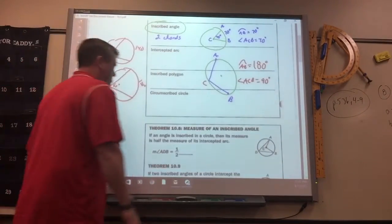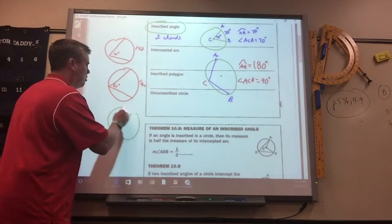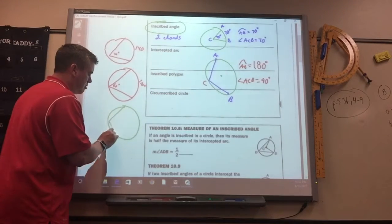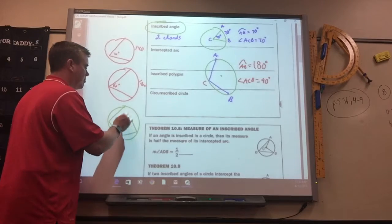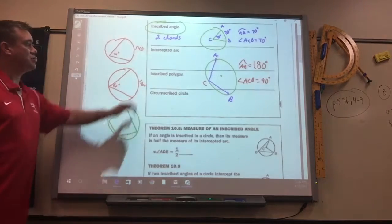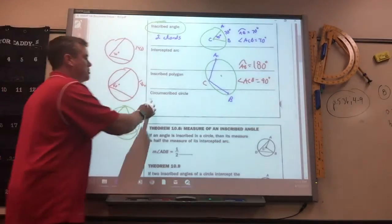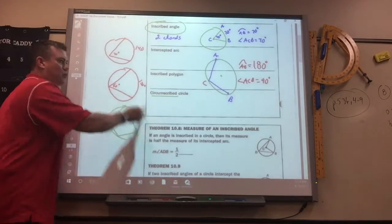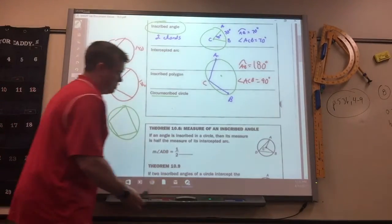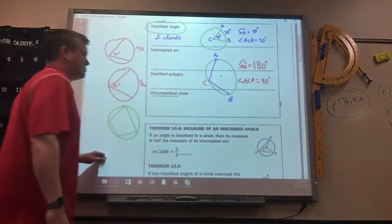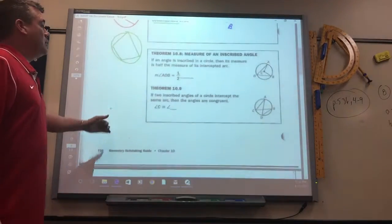An inscribed polygon, which we're just going to do quadrilaterals, is just something that's drawn inside. Circumscribed means to draw the circle around it. That's no big deal. You don't need to know that.